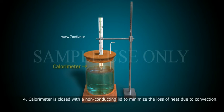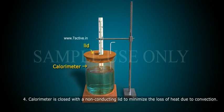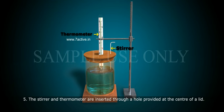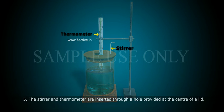The calorimeter is closed with a non-conducting lid to minimize the loss of heat due to convection. The stirrer and thermometer are inserted through a hole provided at the center of the lid.